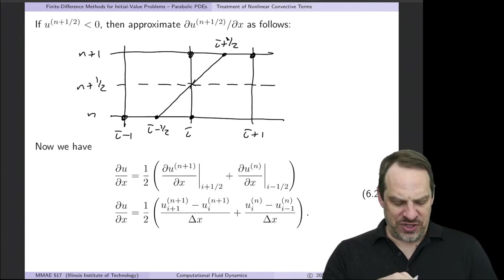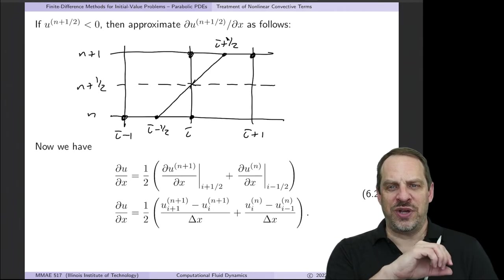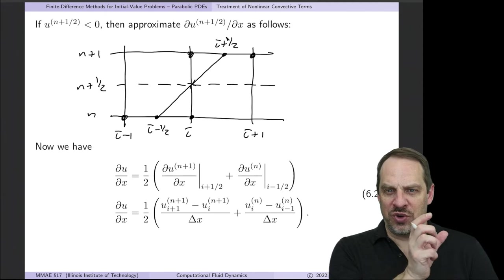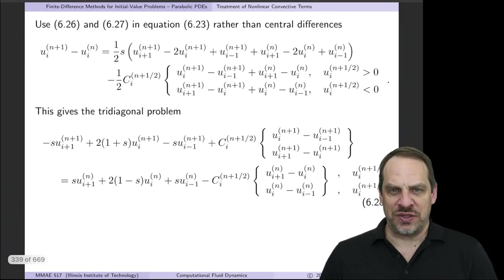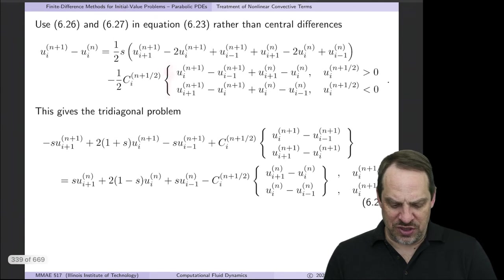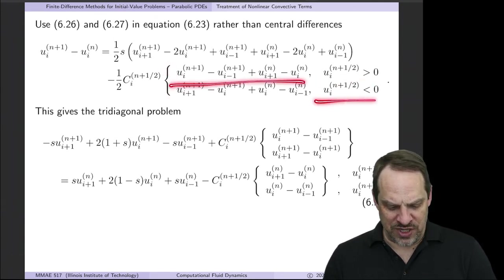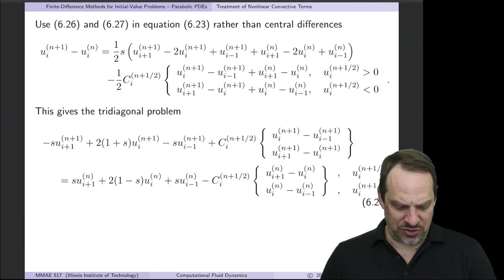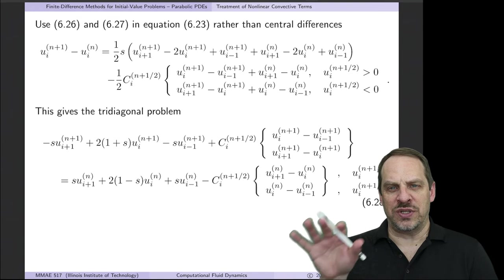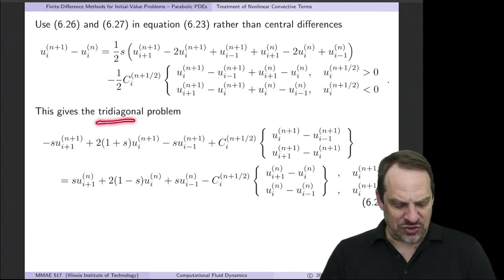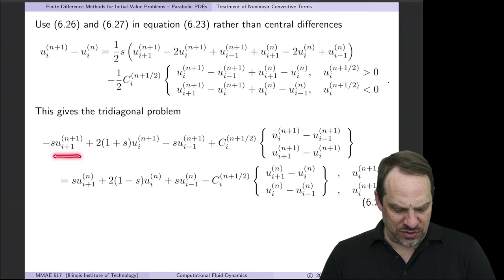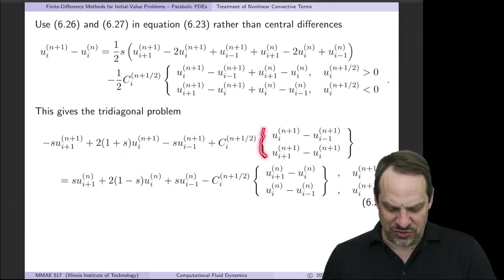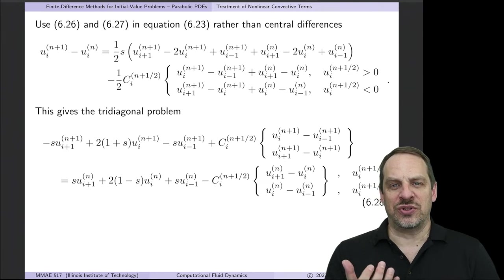So let's put this all together. If you take these first derivative terms and incorporate them into the Crank-Nicholson equation from the previous video — replacing the central differences with the upwind differencing finite differences — then you get a rather complex expression. It involves if-then decisions: if u is positive, use one form; if u is negative, use the other, so you'll need if-then statements in your code. But when you put all the unknowns on the left and all the knowns on the right, this is just a tridiagonal problem — three unknowns on the left — and it's still just a tridiagonal system of equations regardless of whether u is positive or negative.